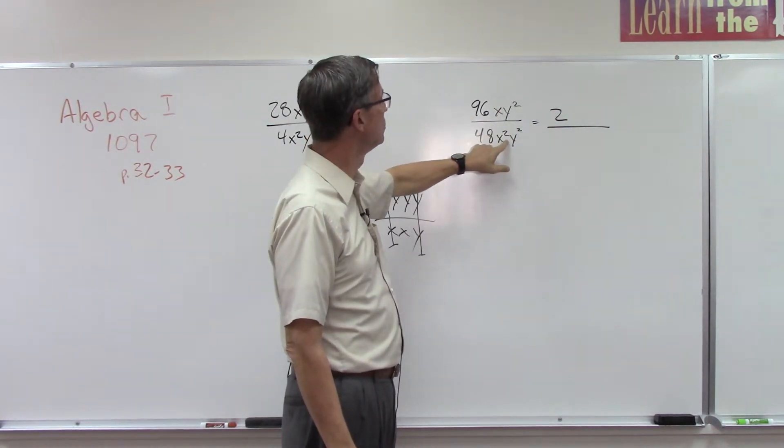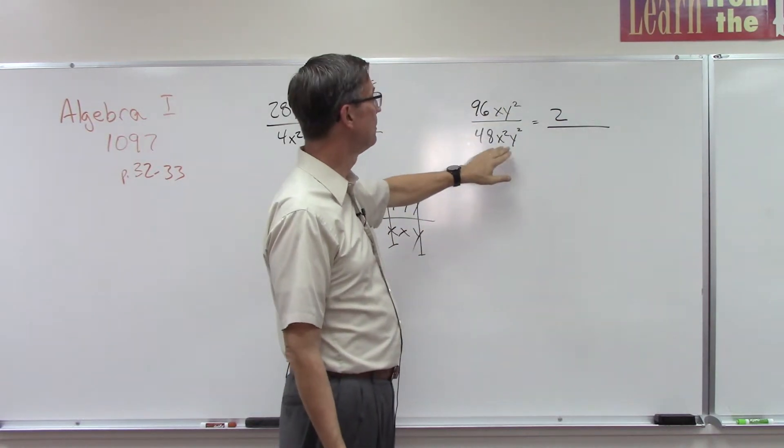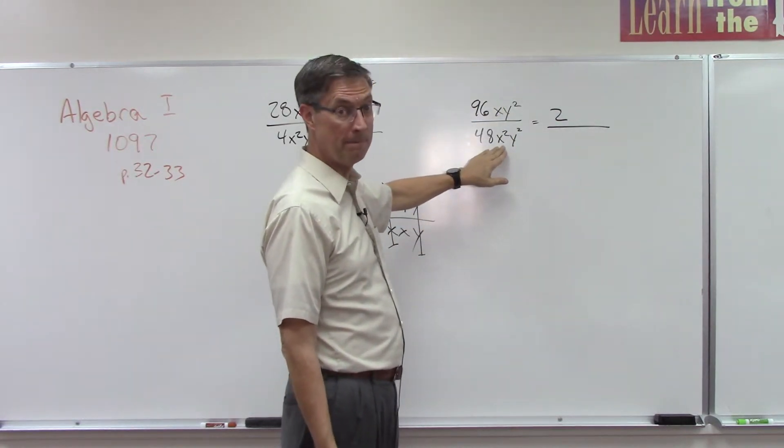Let's think about x. So we have 1x on the top, 2 on the bottom. We're going to subtract the smaller from the larger, so 2 minus 1 is 1, and that one's going to be on the bottom.